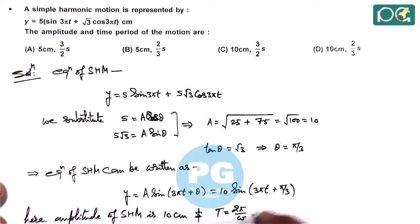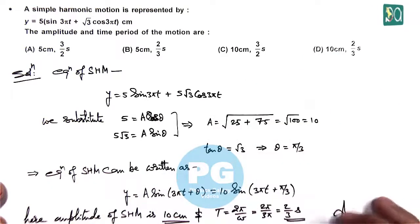And time period we can write 2π by ω, and the value of omega here is 3π, so this is 2π by 3π which is 2/3 second. So here 10 centimeter and 2/3 second are the required parameters to be obtained, so the answer matches with option D.